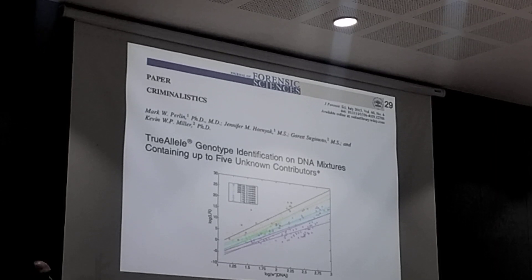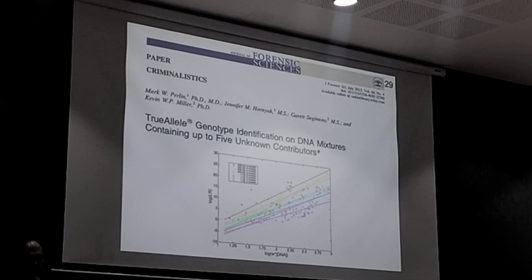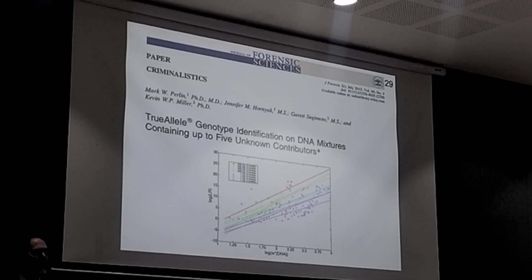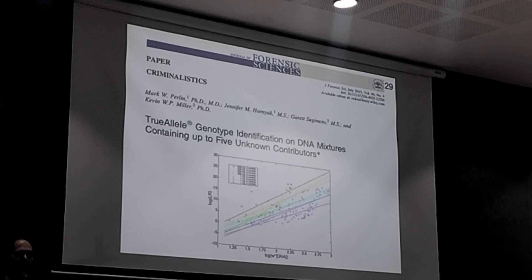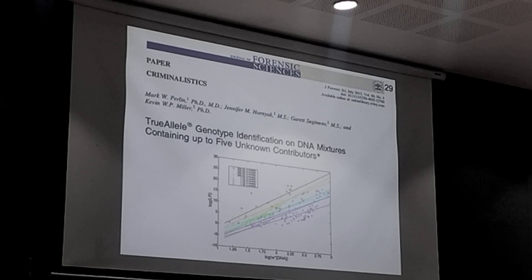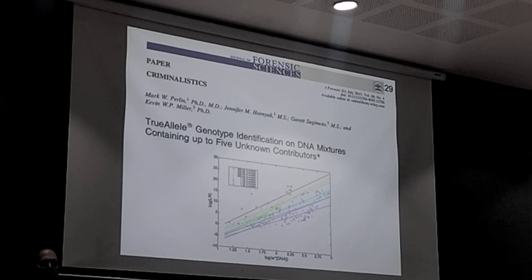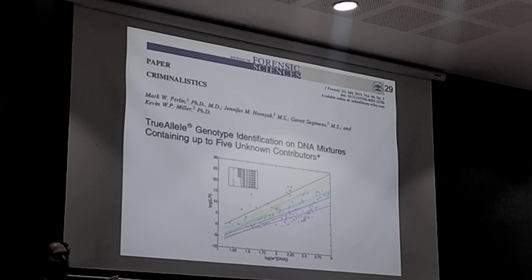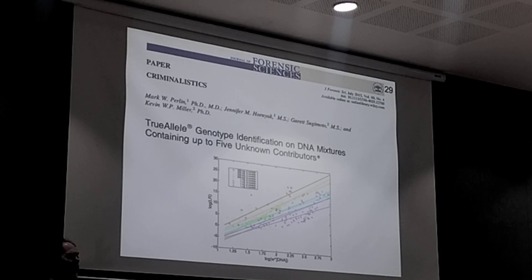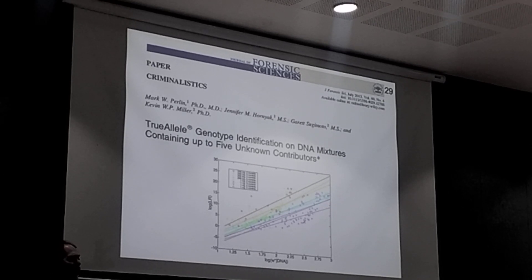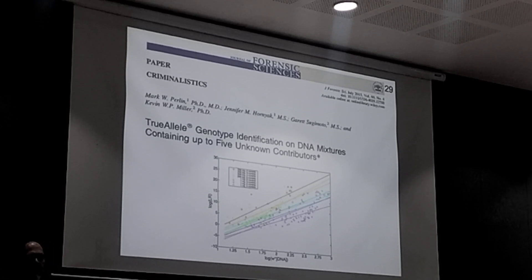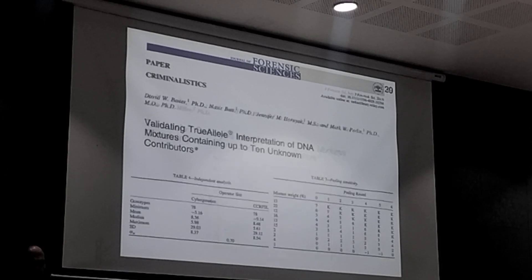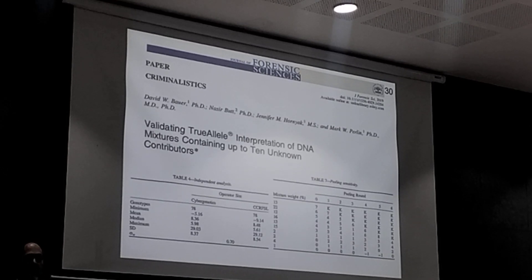Another study involved up to five unknown contributors, done with the California lab. Whether it's high-template or low-template DNA with two, three, four, or five contributors, the behavior on this plot of the amount of DNA versus the amount of information gives the same slope response. Statistically — using analysis of covariance — it makes no difference how many contributors there are when looking at how the DNA of one contributor affects the amount of information.